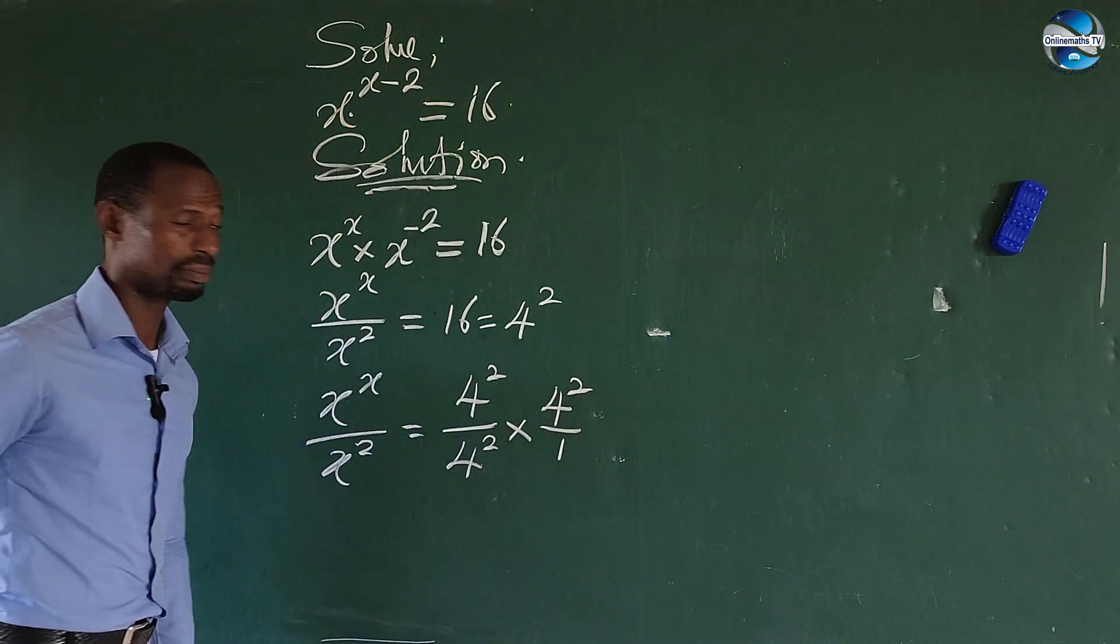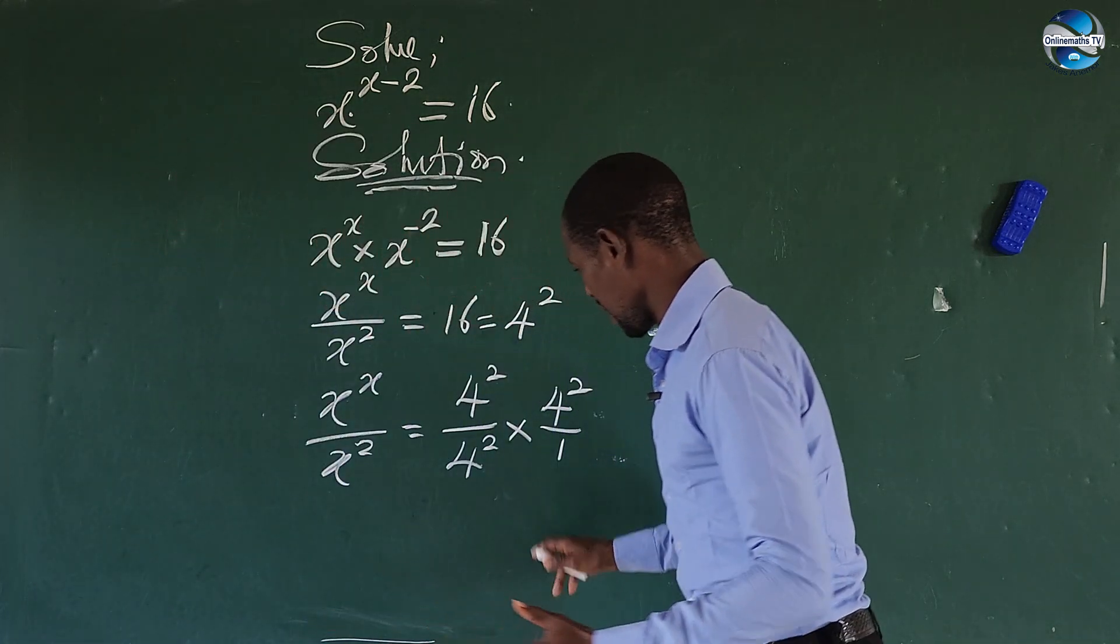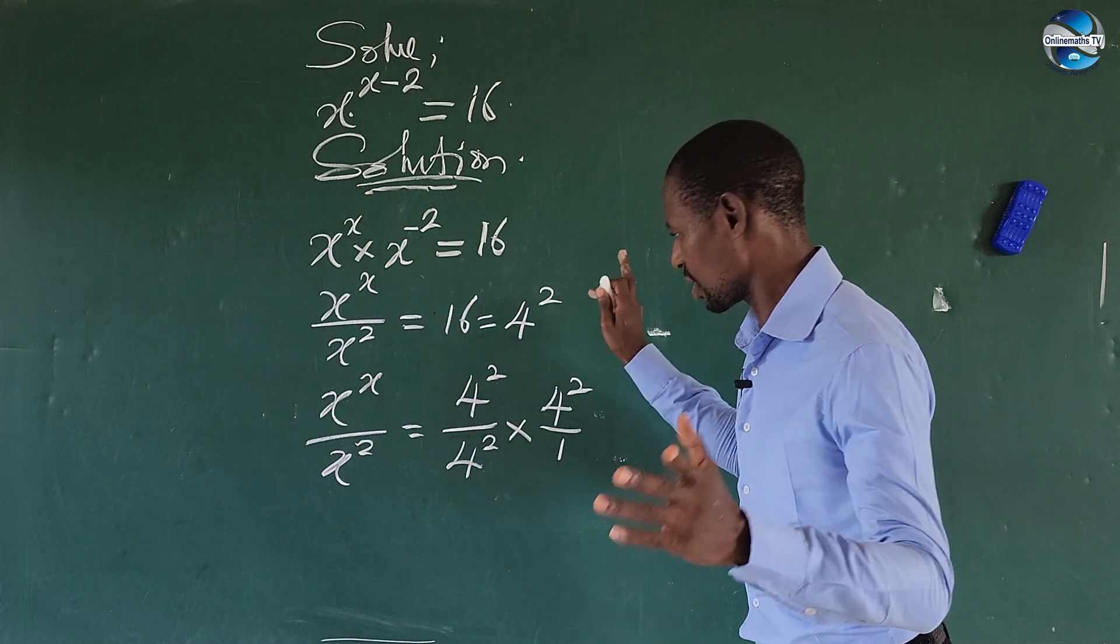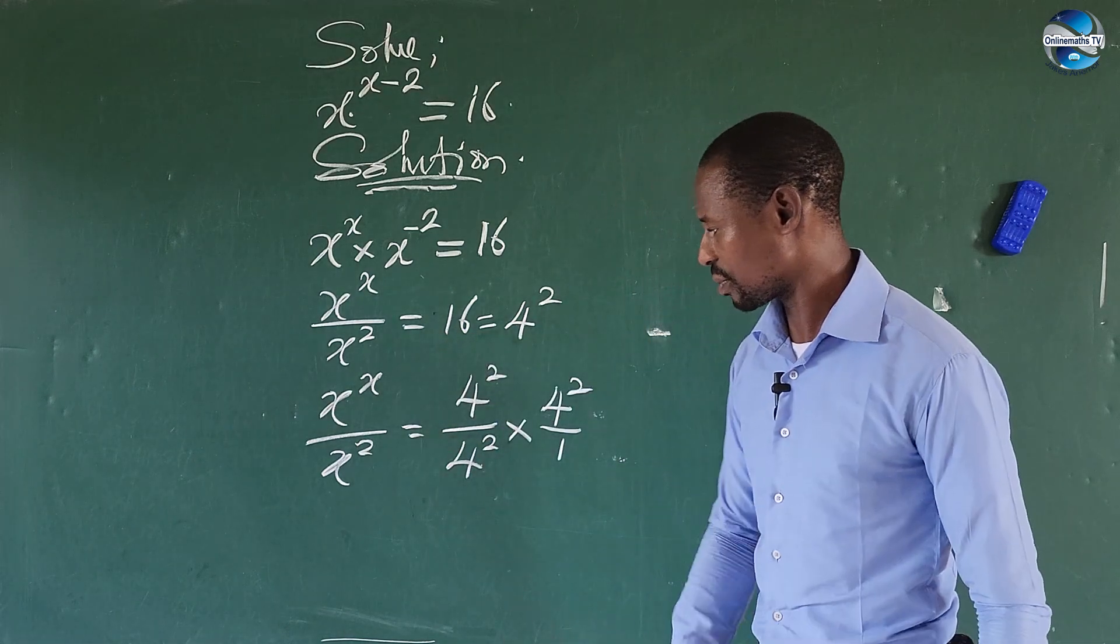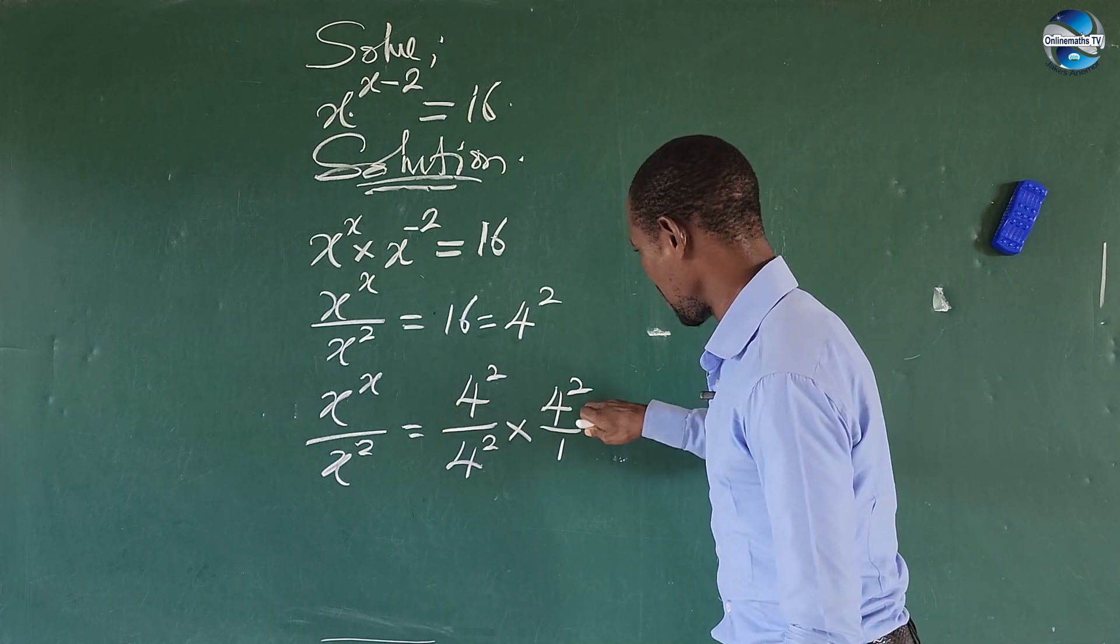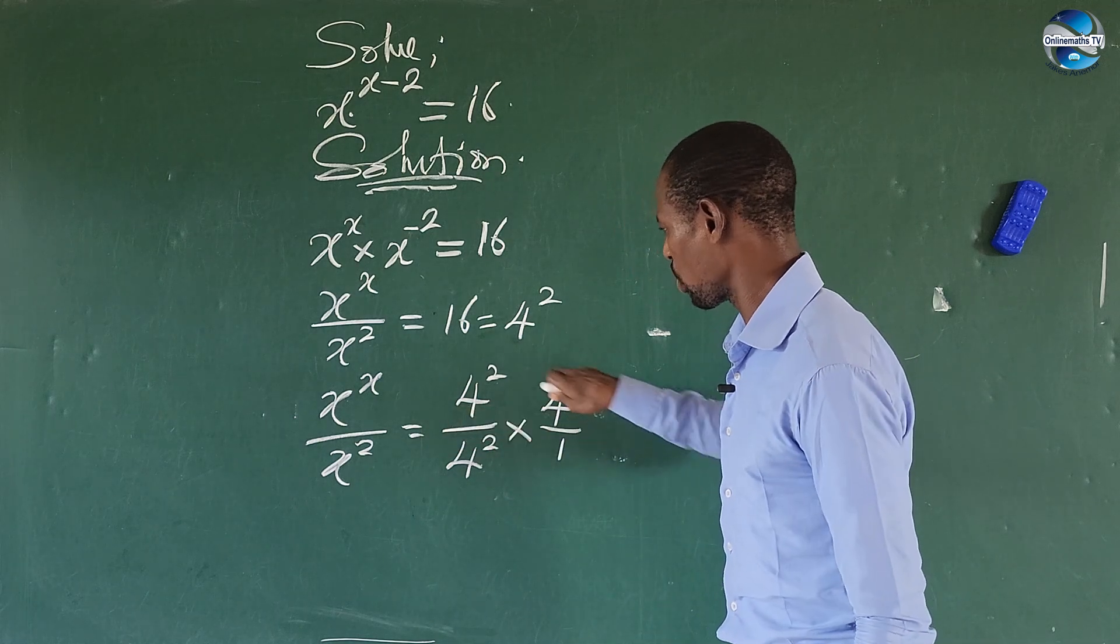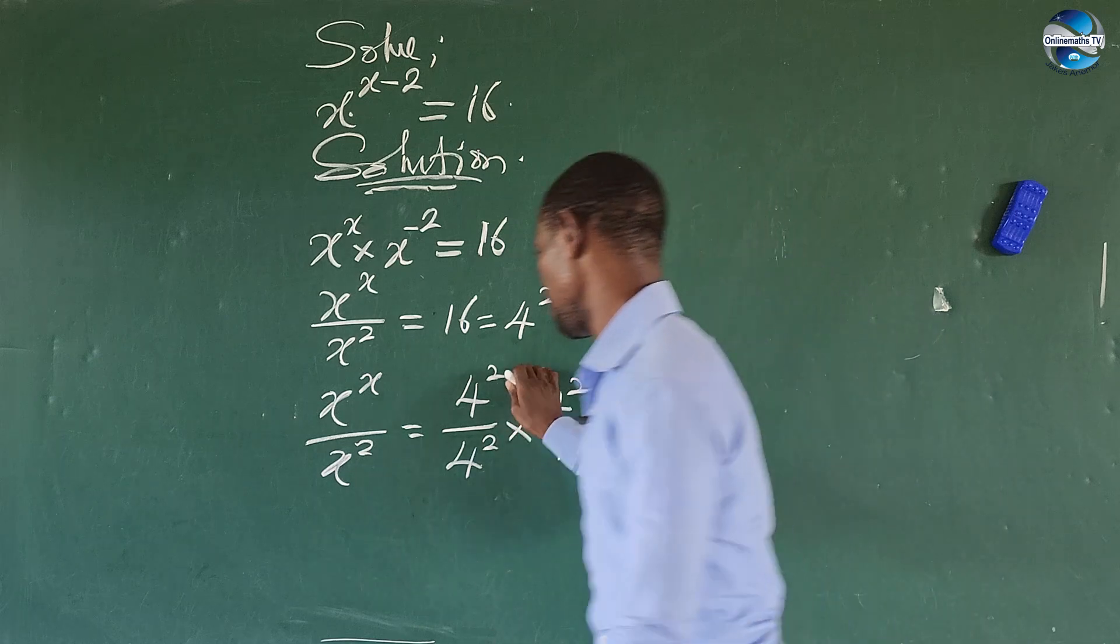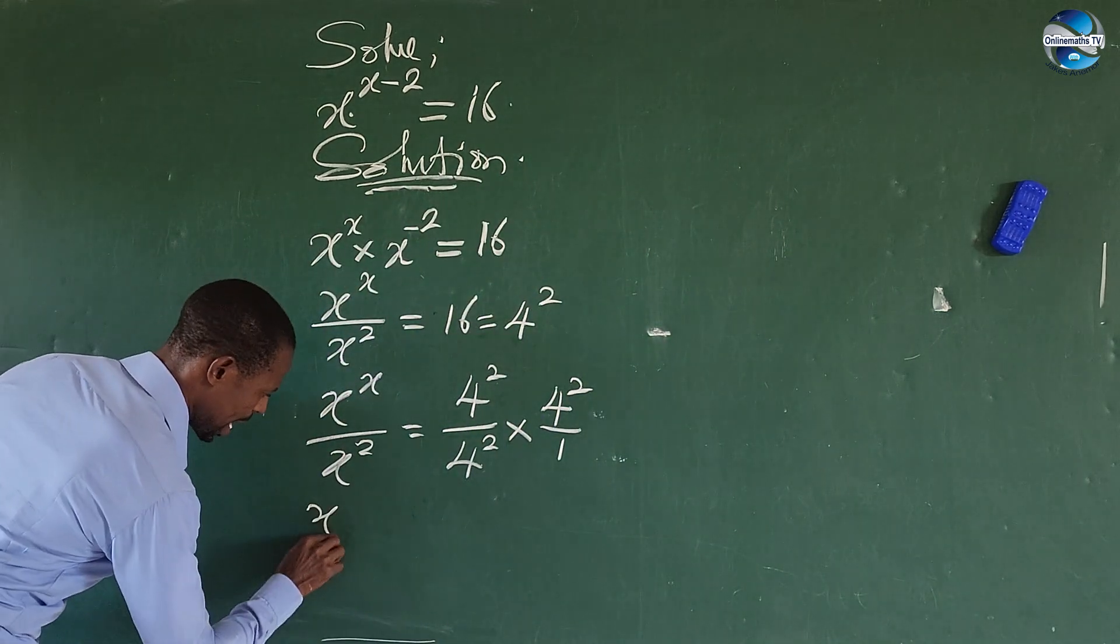Easy. Now from here you discover that this will cancel out to give us this back, which automatically will lead us back to this expression here. So if we multiply this by this, since the bases are the same, we can add the power.